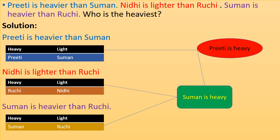Suman is heavier than Ruchi. So under heavy we will write Suman and under light we will write Ruchi. So from last two tables we conclude that Ruchi is heavier than Nidhi but is lighter than Suman. So we conclude that Suman is heavier.